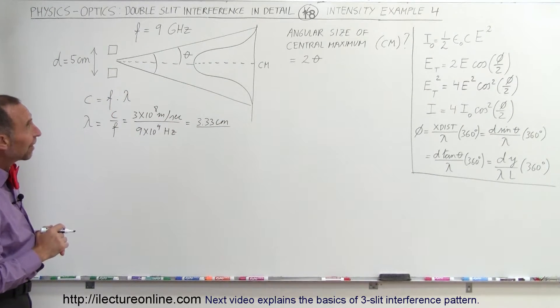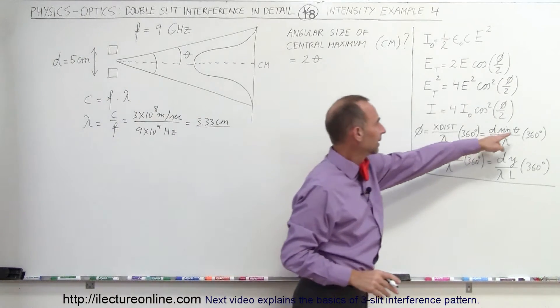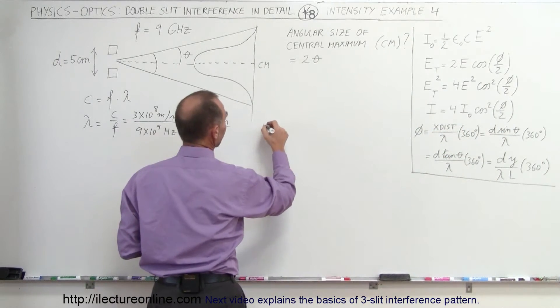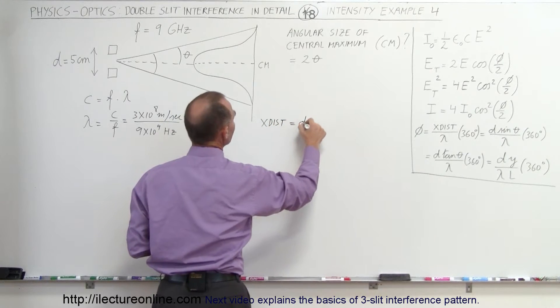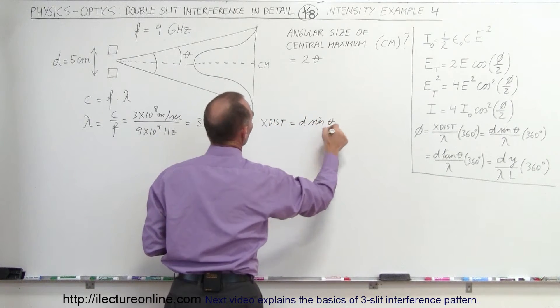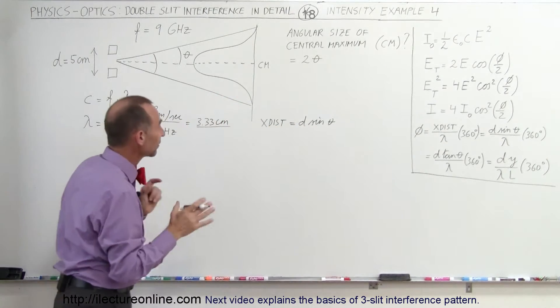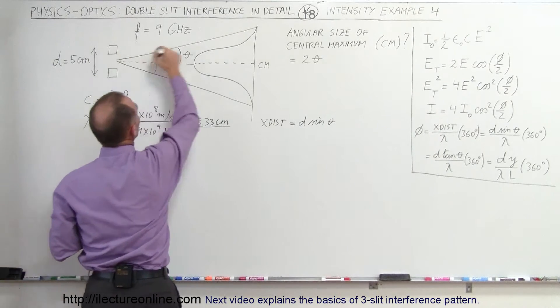Next we need to find theta. Notice that theta can be found by setting the extra distance equal to D sine theta. We know that the extra distance traveled is equal to D sine theta. We know D, but we don't know the extra distance traveled because we need to figure that out.